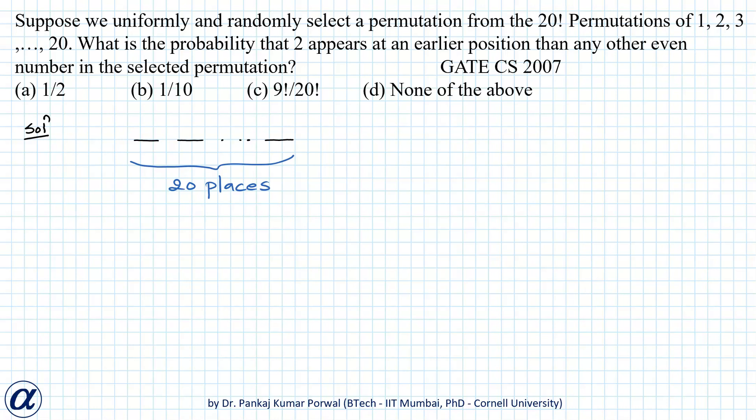In this question, we are given first 20 natural numbers that is numbers 1, 2, 3, dot dot dot up to 20 and there are 20 places and we are also given that there will be 20 factorial ways to arrange these 20 numbers in these 20 places.